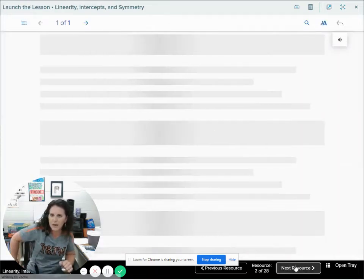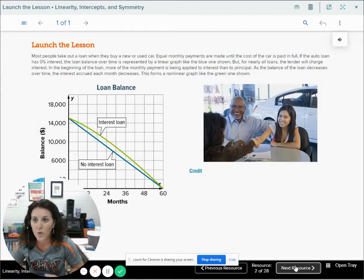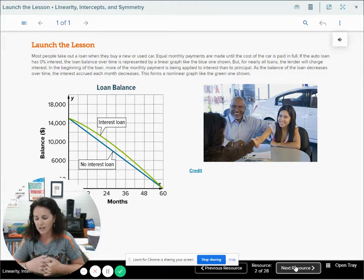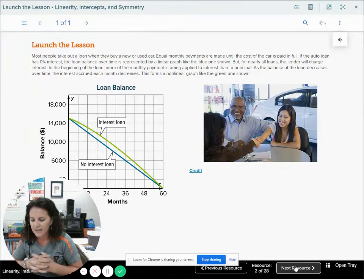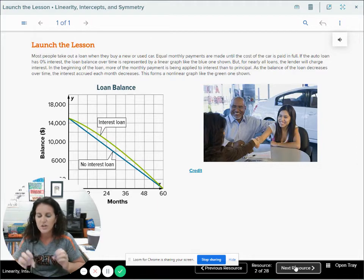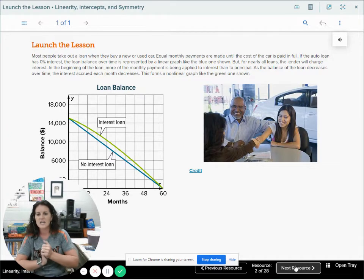What are we talking about when we say linearity, intercepts, and symmetry? The goal of this lesson is to identify linear and nonlinear functions, to identify the intercepts of function, and to identify whether graphs of functions possess line or point symmetry and determine if they're even, odd, or neither.